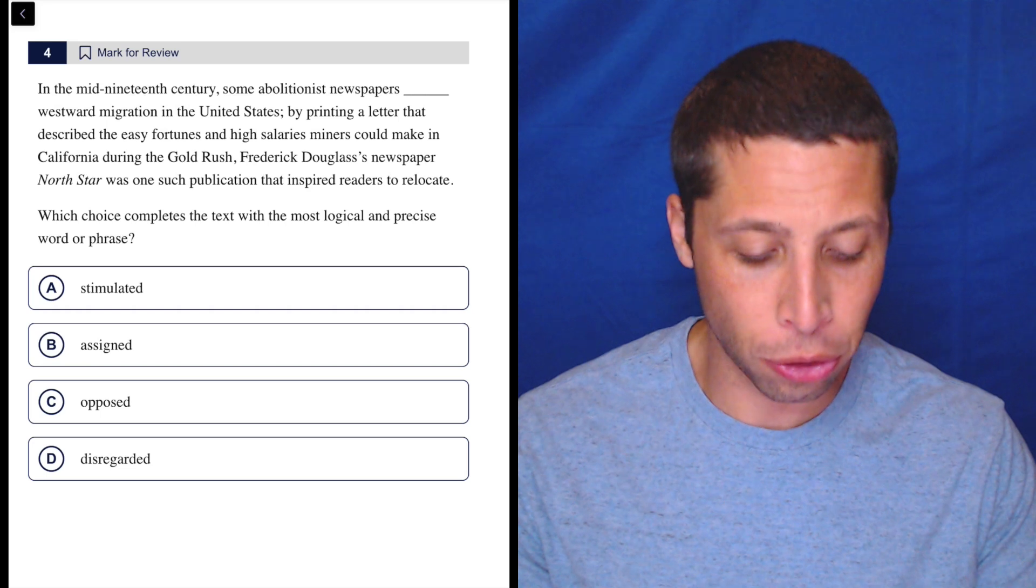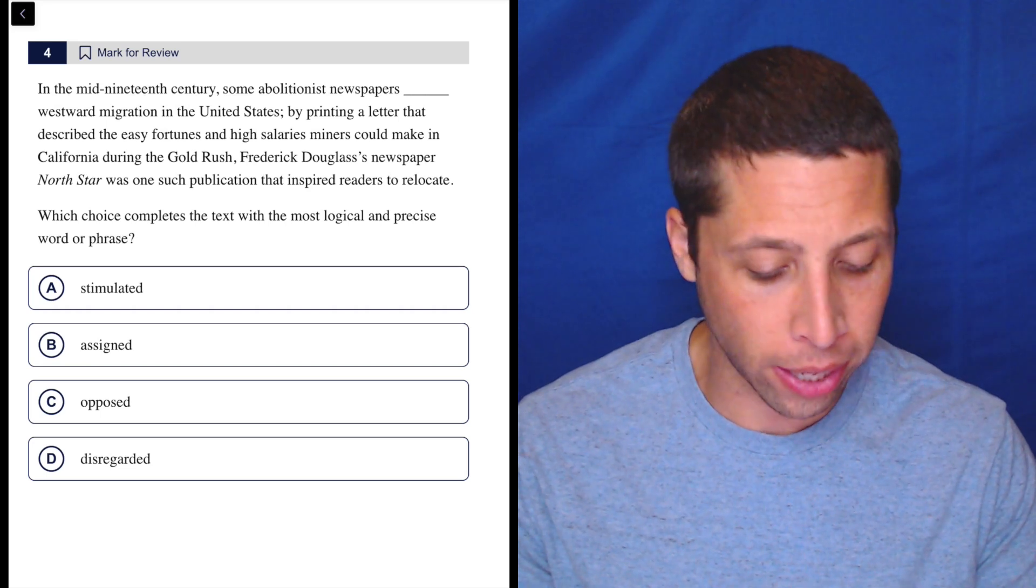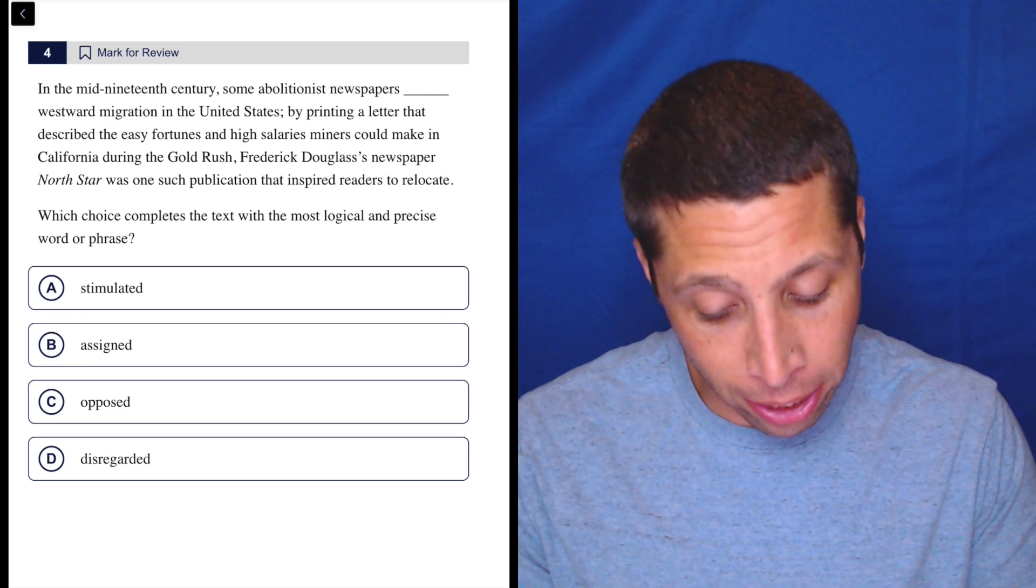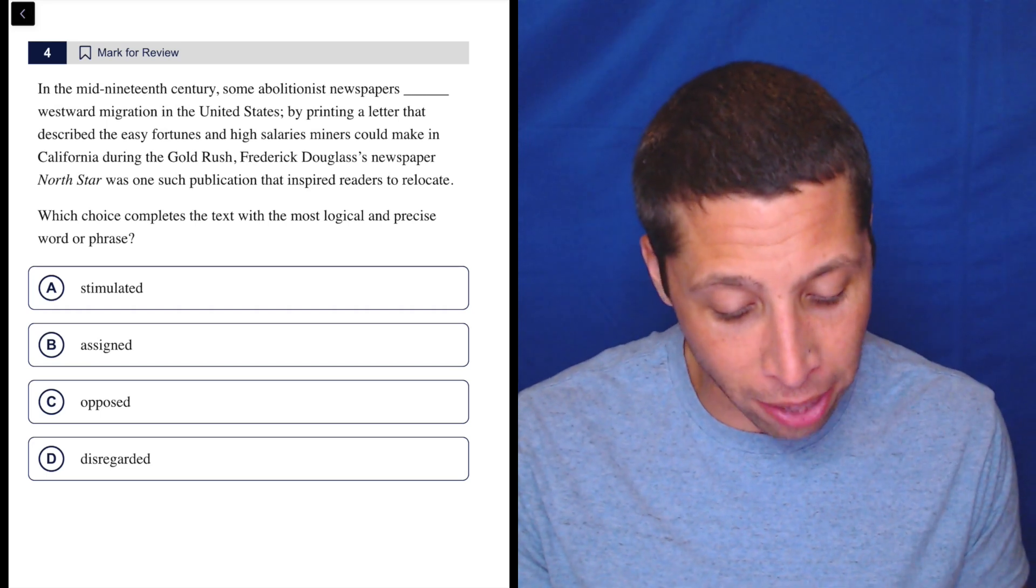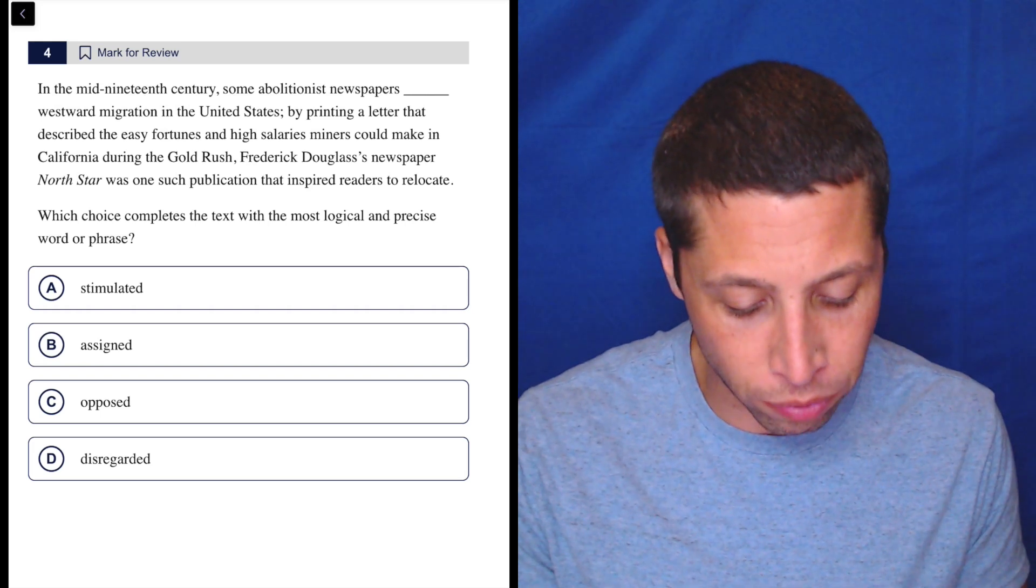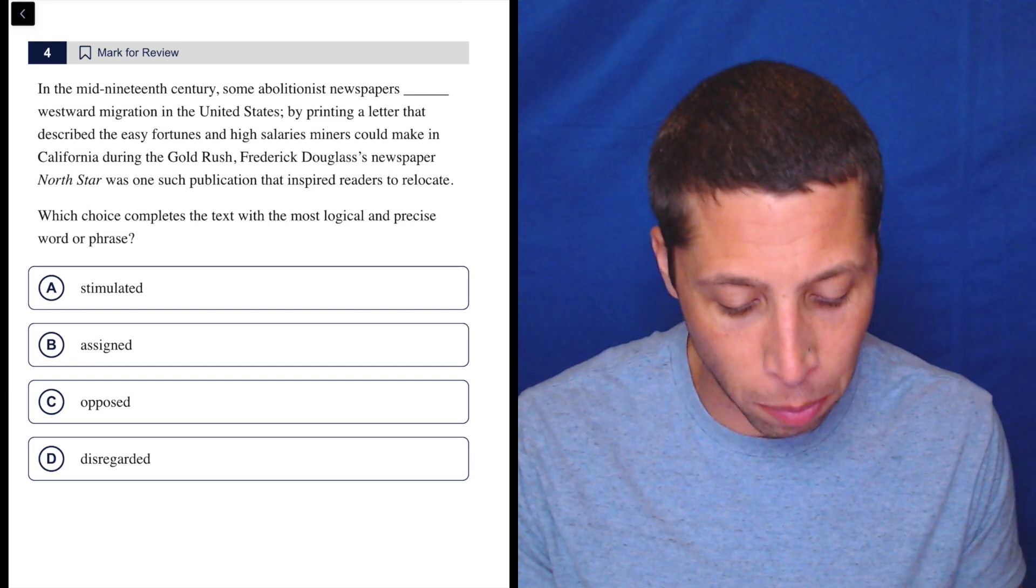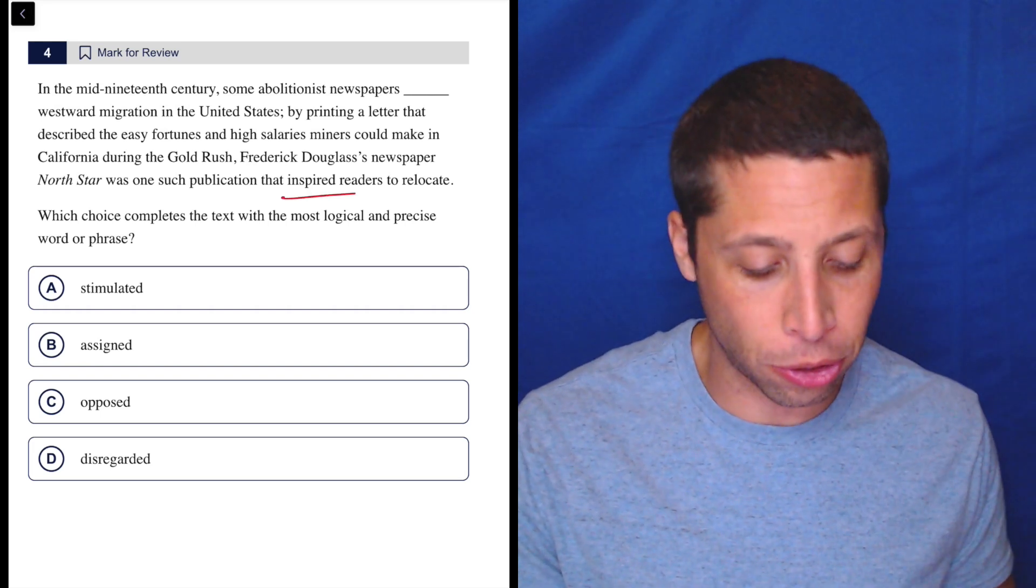In the mid-19th century, some abolitionist newspapers blank westward migration in the United States. By printing a letter that described the easy fortunes and high salaries miners could make in California during the gold rush, Frederick Douglass' newspaper North Star was one such publication that inspired readers to relocate.